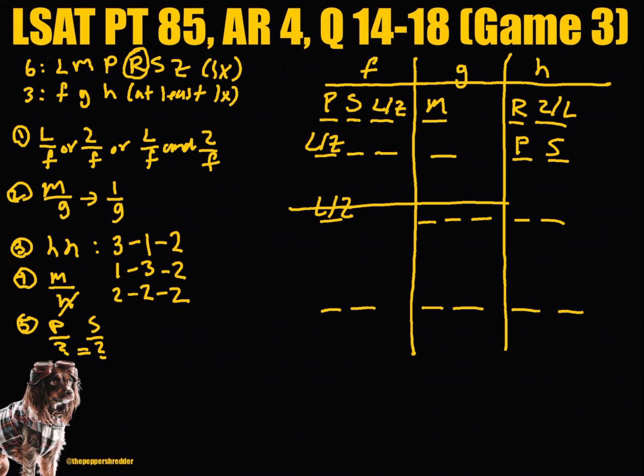In the next instance we can group P and S in group G. Only one of either L or Z must be grouped with F, and M must also be grouped with F. This would leave R and either Z or L grouped with H.